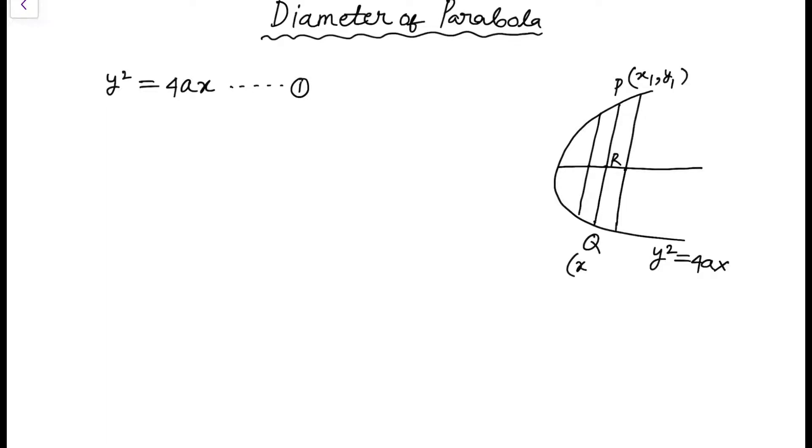Point P is (x₁, y₁), Q is (x₂, y₂), and R is the midpoint of PQ at (h, k). We have a lot of parallel chords, and the locus of (h, k) will be the diameter. In case of parabola, it will be a straight line parallel to the axis of the parabola. Let's see how we can find the locus of the midpoint.